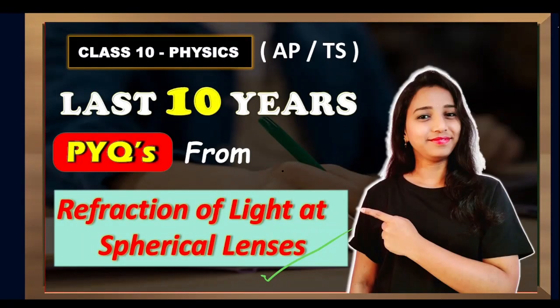That covers all the previous year questions from the chapters refraction of light at spherical lenses and refraction of light at plane surfaces for AP students. Focus especially on numericals and ray diagrams from this chapter. We'll meet in the next session covering previous year questions from the chapter Human Eye and the Colourful World. Until then, keep learning — bye!